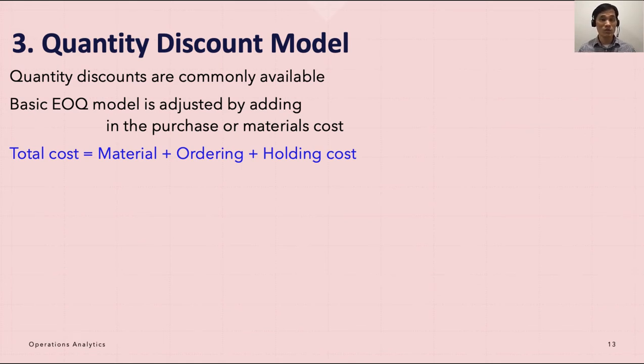This quantity discount is very relevant in inventory management. How should we reflect that into our model? That's our quantity discount model, and the total cost equals material plus ordering cost and holding cost.